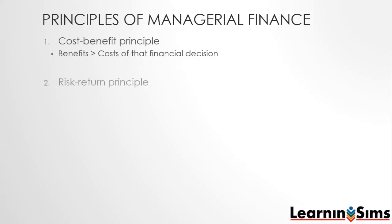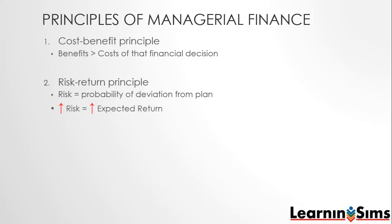The second principle is that of risk and return. Risk is the probability of a deviation from a plan. This principle dictates that the higher the risk related to a decision, the higher the return we should expect. We see this principle in practice all the time in the insurance industry, for example.